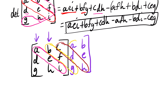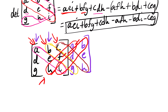Then minus the other diagonals: A·F·H, I·D·B, and C·E·G. So we have the sum of the products of these diagonals, minus the other diagonals. That is the concept behind the 3 by 3 matrix determinant.